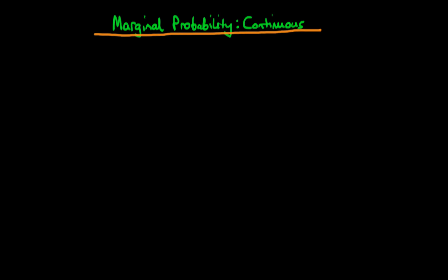In this video I'm going to explain what the concept of a marginal probability means in the case of continuous random variables, and I'm also going to explain how you can work it out from a probability density function.